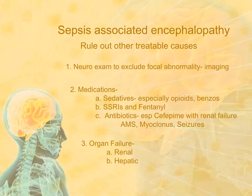Of course, organ failure — such as renal insufficiency or hepatic insufficiency related to shock liver, in which one sees an elevation of transaminases — in which you may not necessarily see an increase in ammonia levels, can also contribute significantly to the encephalopathy at this time.